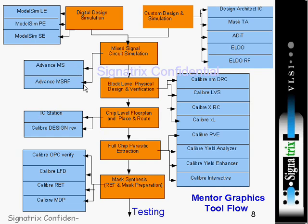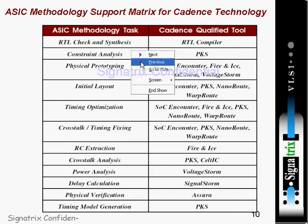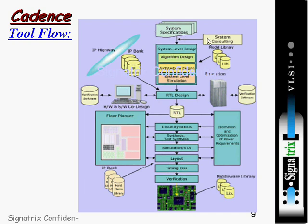Coming back to the Cadence design flow: they show their own design flow starting with system specification, then system consulting, algorithm design, architecture design, and system-level simulation. In the ASIC design flow, after system specification you perform system-level design. Nowadays people use ESL tools for system-level design and verification, where you design an algorithm or architecture and run system-level simulation using SystemC, C++, or other high-level verification languages.